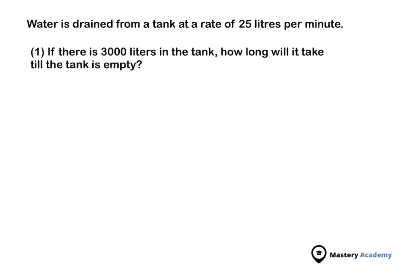The rate is given to us as 25 liters per minute — this is a key point to note. The symbol we use for liters is L, like on a two-liter Coke bottle where it says '2L'. The abbreviation for minute is 'min'. The division line means this can be written as 25 liters over minute — both notations mean the same thing.